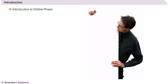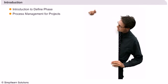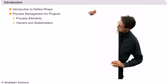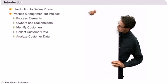In Lesson 1, we focus on process management for Six Sigma projects, wherein we discuss process elements, owners and stakeholders, identifying customers, collecting and analyzing customer data, and translating customer requirements.